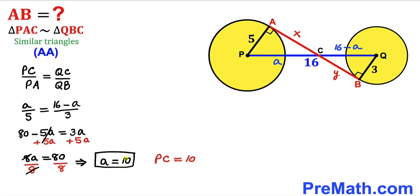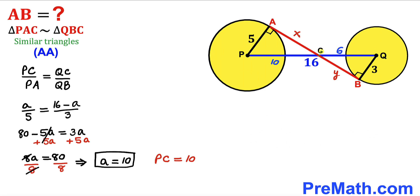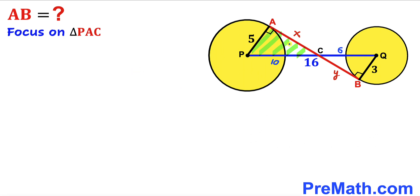Since lowercase a represents segment PC, our PC length is 10 units. Therefore, the remaining segment CQ is 16 minus 10, which gives us 6 units. Now let's focus on right triangle PAC and apply the Pythagorean theorem to solve for X.